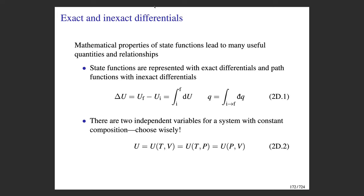Recall that state functions are represented by exact differentials, such as this example here involving the internal energy. The dU is an exact differential, and to calculate a change in the state function, you simply need to know the final value minus the initial value. Contrast that with a path function like heat, which is represented by an inexact differential — you need to know the specific path between the initial state and the final state in order to calculate the actual heat of that path.